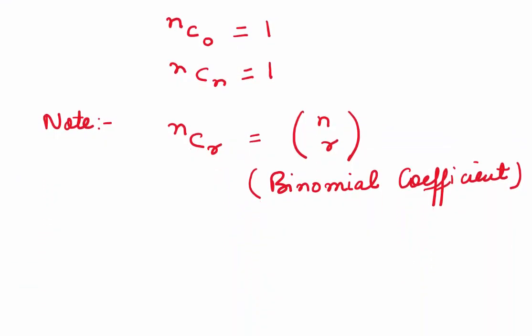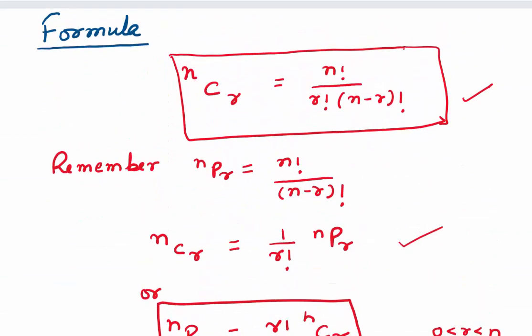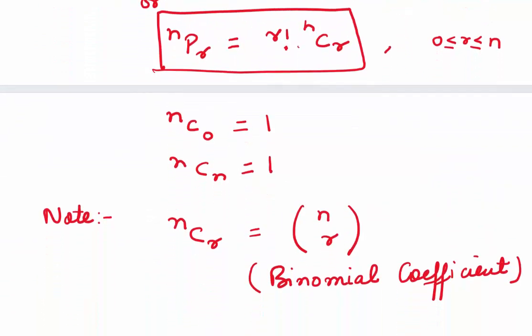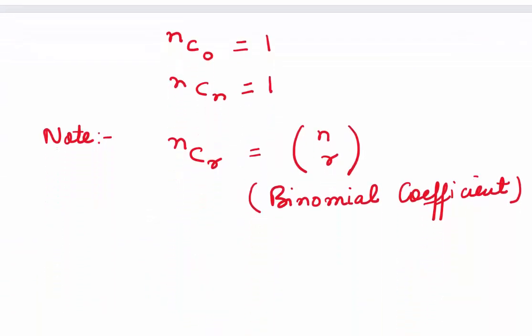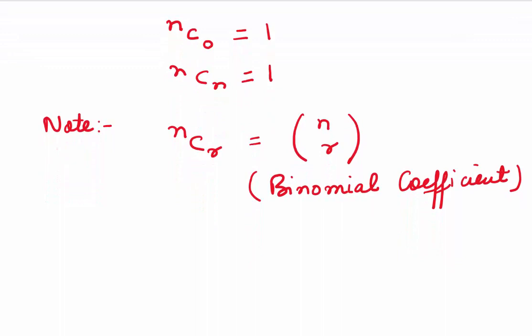A few facts: NC0 equals 1 and so does NCN — you can verify this by applying the formula. NCR is also the binomial coefficient, written as (N choose R), since it equals N factorial divided by R factorial times (N minus R) factorial. So NCR is also called the binomial coefficient.